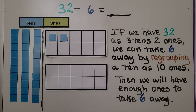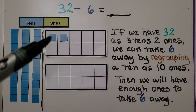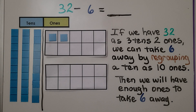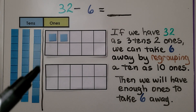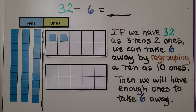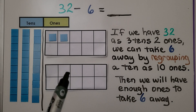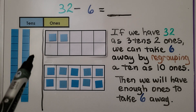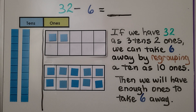Here we have 32 minus 6. We have three 10s and two 1s. We can take away 6 by regrouping a 10 as 10 1s. We can take this 10 and put it here as 10 1s. We move the 10 that was here to here as 10 1s. Then we have enough 1s to take 6 away.